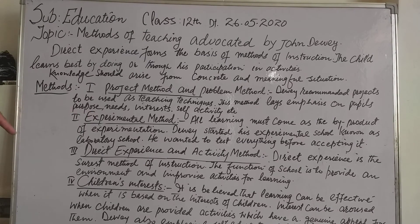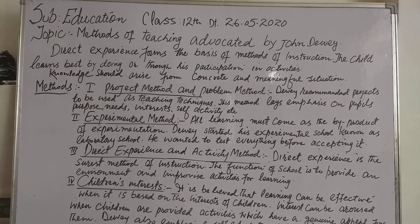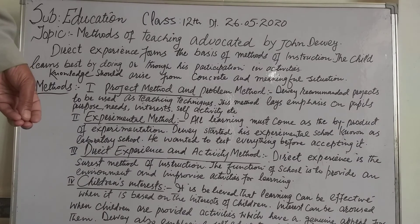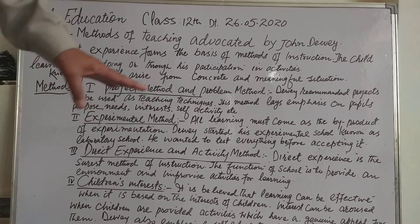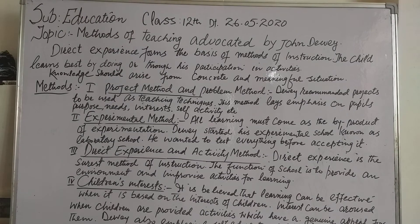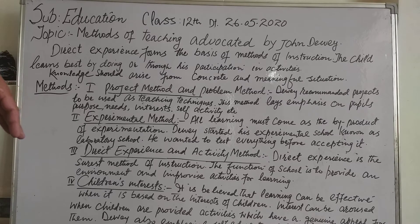Number four: children's interests. It is believed that learning can be effective when it is based on the interest of children. Interest can be aroused when children are provided activities which have a genuine appeal. When children get interested in activities, they pursue them wholeheartedly, so that there is acquisition of necessary knowledge and skills.